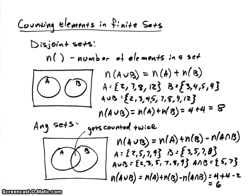Here's a quick example with two disjoint sets. Set A contains 2, 7, 8, and 12, and set B contains 3, 4, 5, and 9. Notice there are no elements common between those two sets. So A union B is equal to all the elements in both sets: 2, 3, 4, 5, 7, 8, 9, and 12 — 8 total. And we can see that the number of elements in the union equals the number of elements in A plus the number in B, or 4 plus 4.